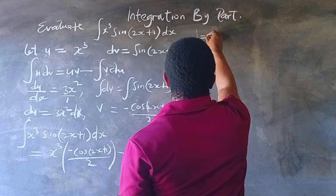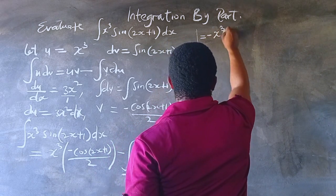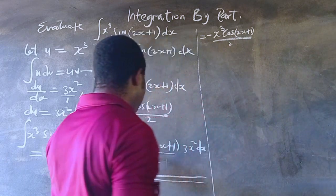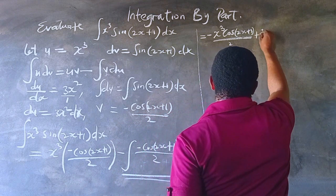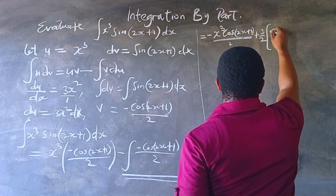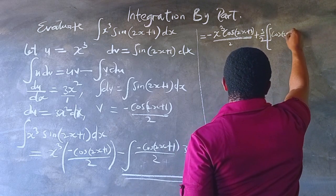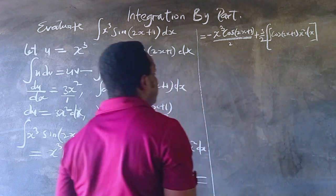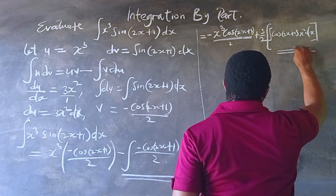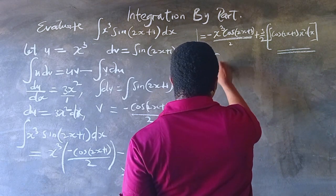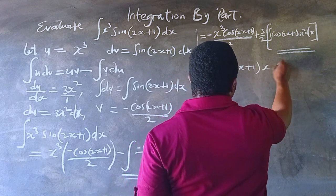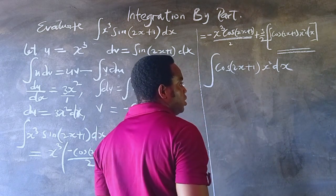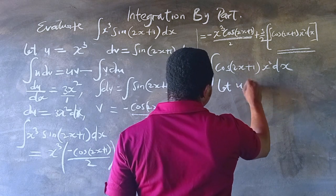Expressing this properly, we have negative x³ cos(2x+1) all over 2. Then the negative one-half and the 3 combine to give 3 over 2, times the integral of cos(2x+1) multiplied by x squared dx. That is the expression we now have to integrate, and we'll put the result back in to obtain the final solution. This is another integration by parts type.